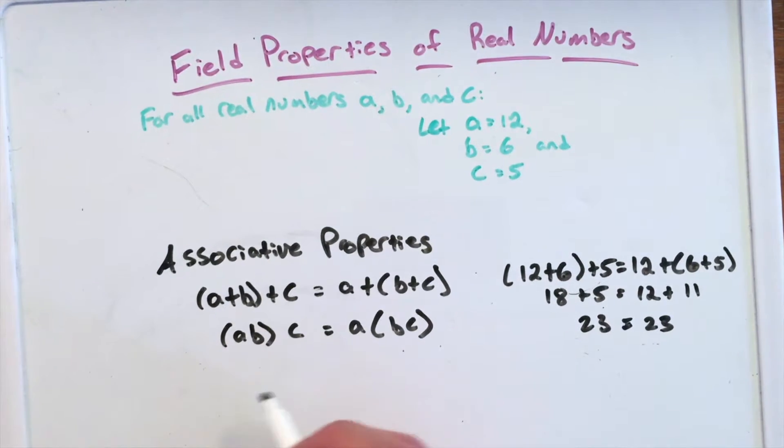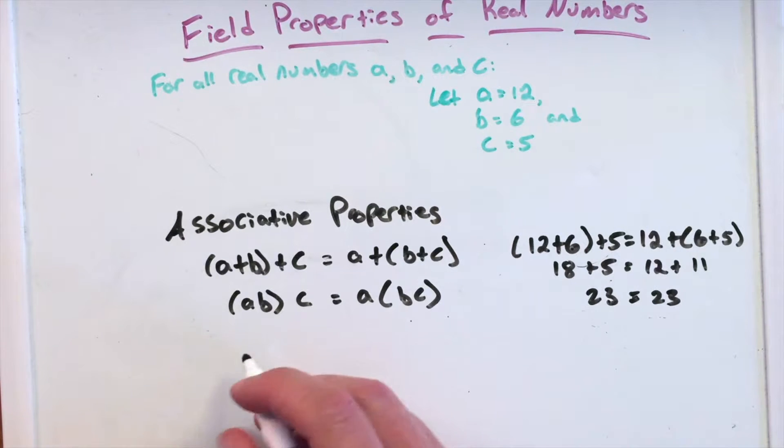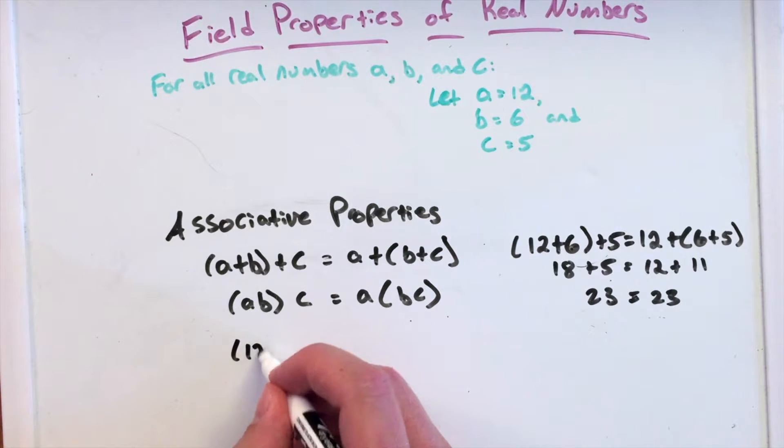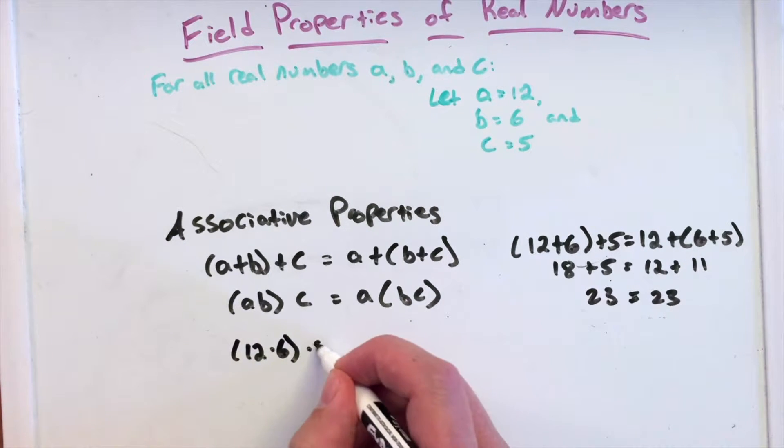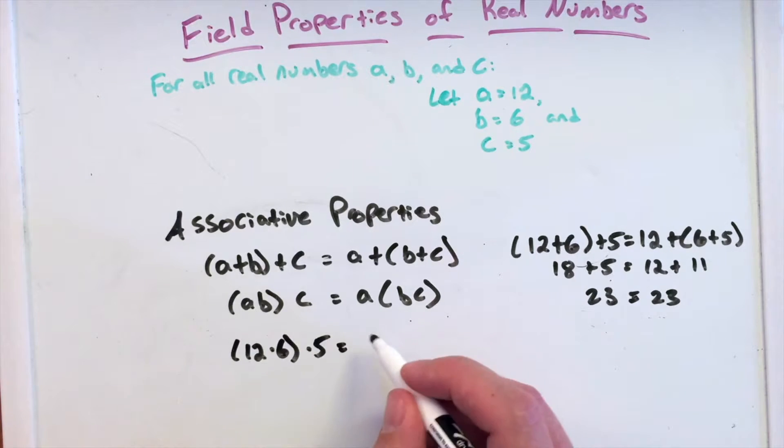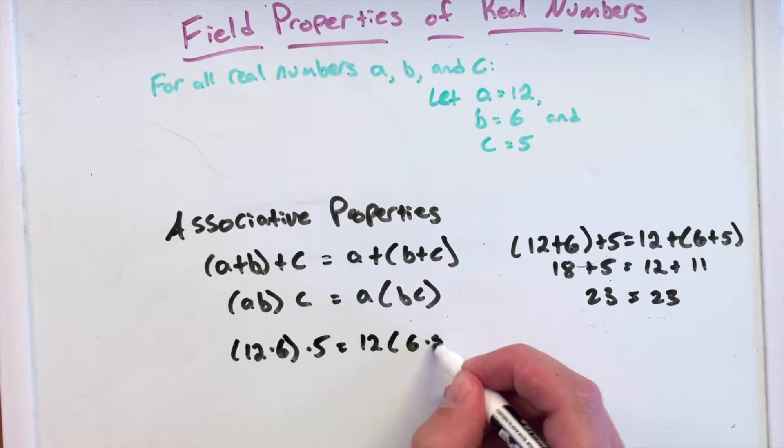Multiplication. Let me put it down here. So we have (12×6)×5, and that is equal to 12×(6×5).